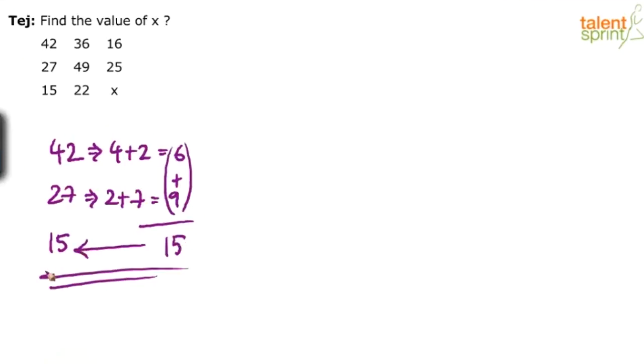Same is applicable for the second column: 36, 49, 22. How do we get this? 36 is 3 plus 6, which is 9. So basically you're finding out the root digit. 49 is not the root digit, but the sum of the digits. 49 is 13, and 9 plus 13 gives you 22.